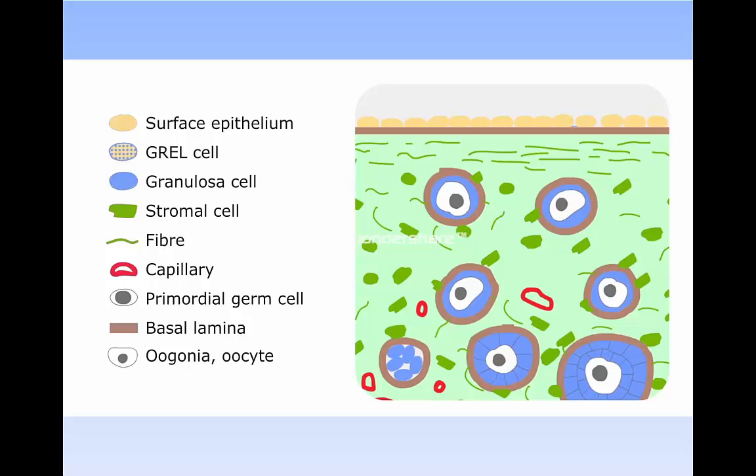You will also note how important the penetrating stroma is to the whole process of ovary formation, including the formation of the ovigerous cords, the surface epithelium, follicles, and the tunica albuginea.